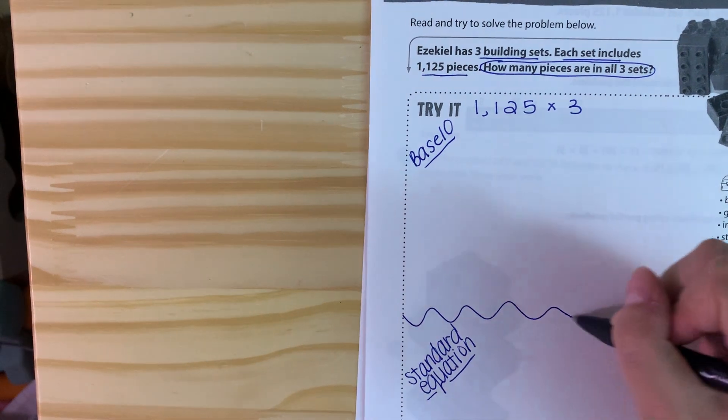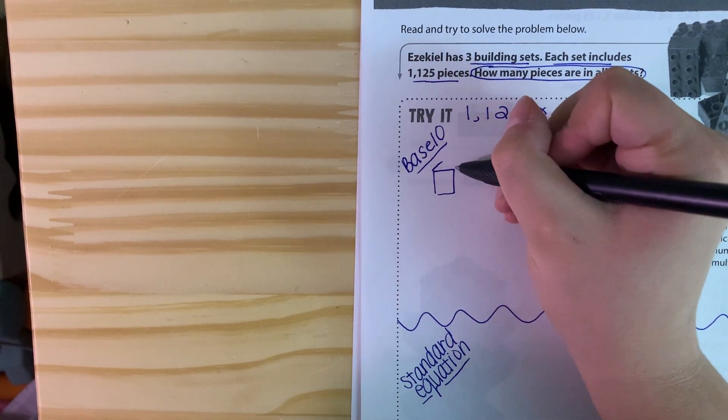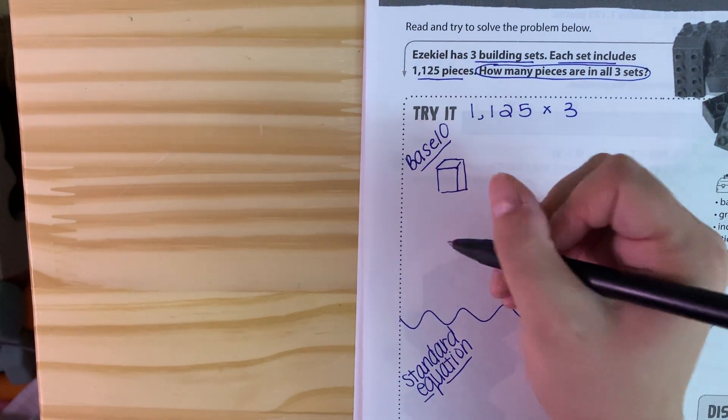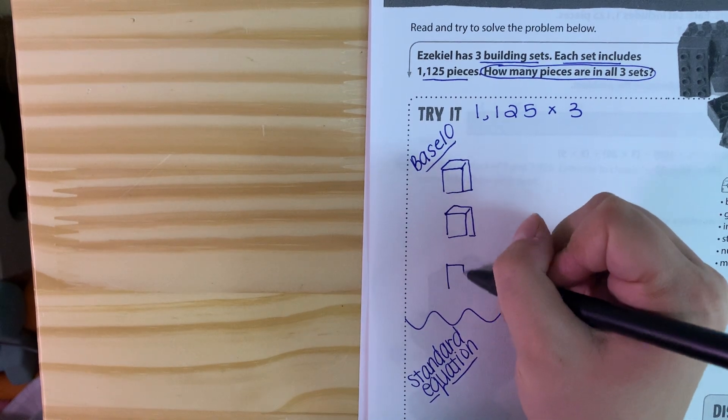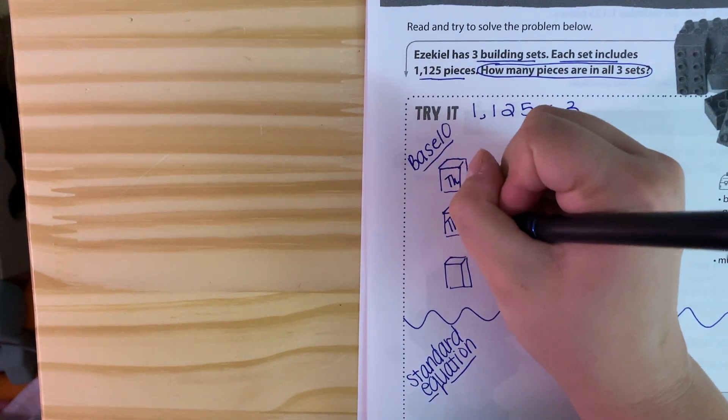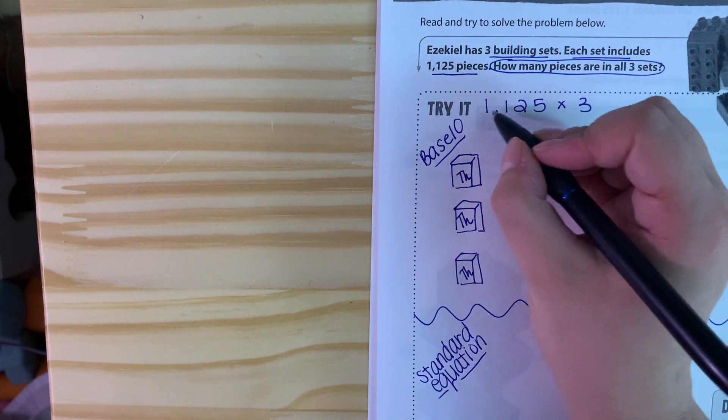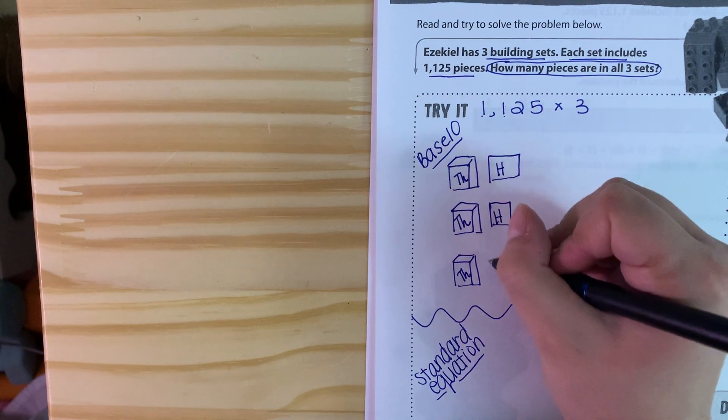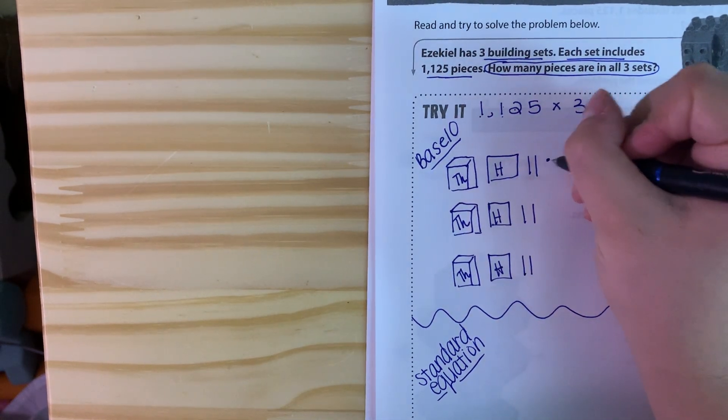So this is our base 10 and then down here will be our regular standard equation. Base 10, we're going to have to have our thousands block, so those are the bigger ones that you see in the classroom, the 3D ones. We're going to have one of those for three times. So we have 1,100, so then we're going to have one flat one and I'm just going to label it H so we can see the difference with our drawing.